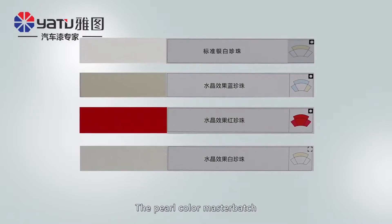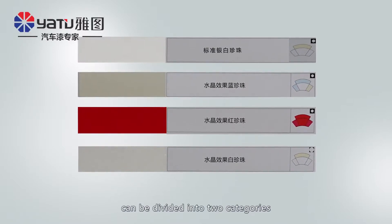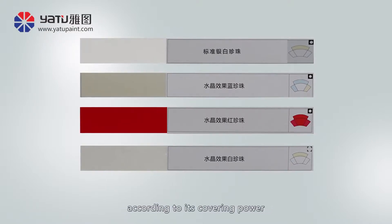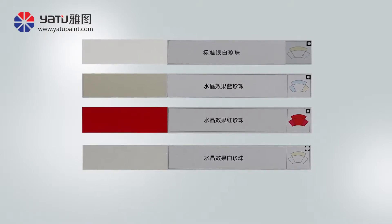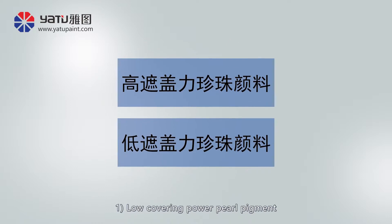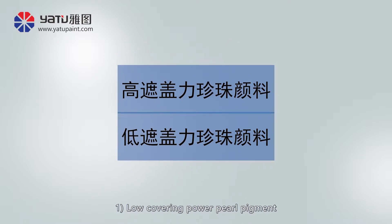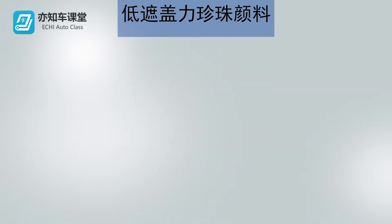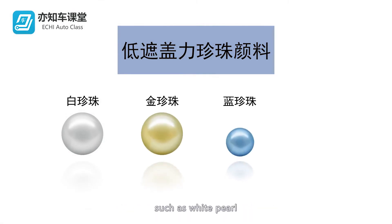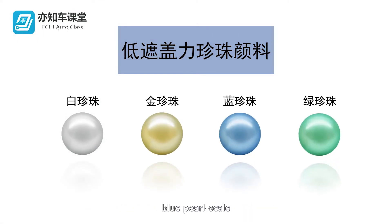The pearl color master batch can be divided into two categories according to its covering power. The first is low-covering power pearl pigment — transparent pearl color master batch, such as white pearl, gold pearl, blue pearl scale, green pearl, etc.